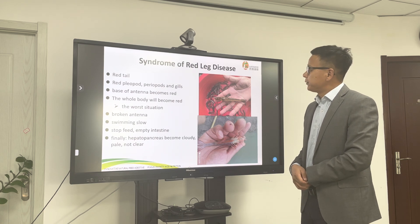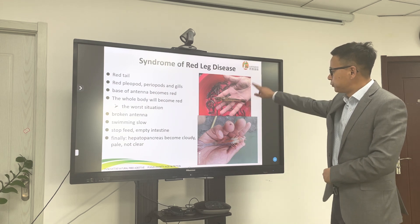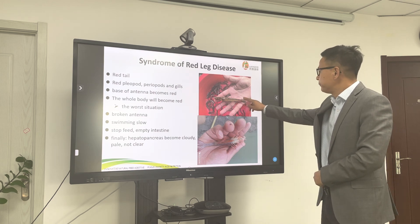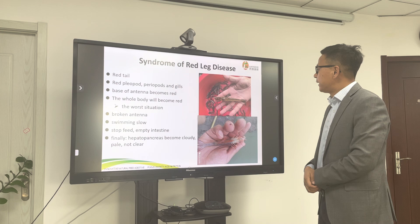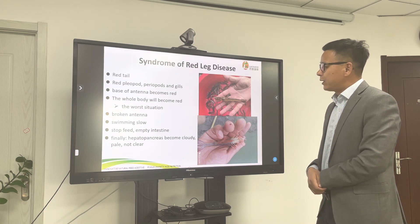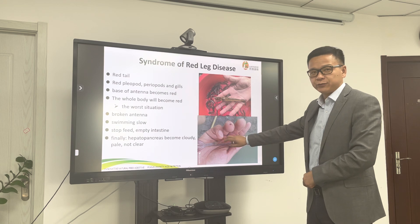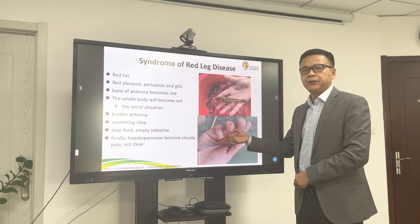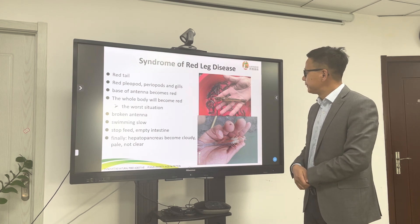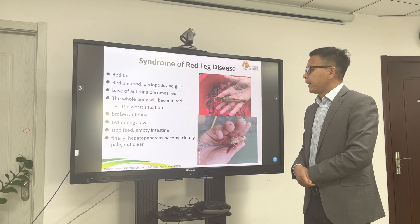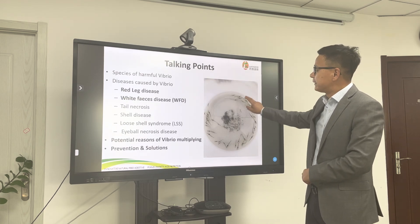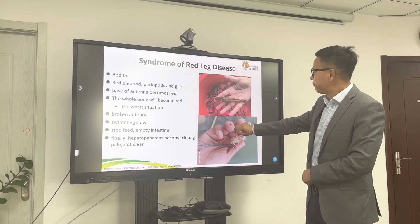The first disease is the syndrome of red leg. Through these two photos, we can see when the shrimp is infected by Vibrio, the tail will become red, and even the legs will become red too. The worst situation is the whole body of the shrimp will become red — that is very, very dangerous. Of course, mortality will be very high. Also, the shrimp will stop feeding and swim slowly. Finally, the intestine will empty.